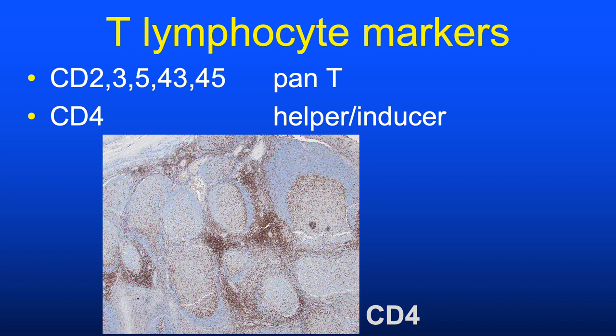A comprehensive review of all CD markers is impossible, but some highlights: the low numbers—CD2, 3, 4, 5, 7, 8—are typically T-cell markers, some pan-T-cell and others more specific. Here's a CD4 stain on lymphoid tissue—most lymphoid follicles and mantle zones are negative, but there are scattered T-cells in the follicle center (follicular T-helper cells), with most cells being interfollicular.